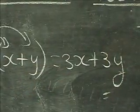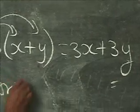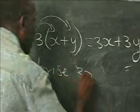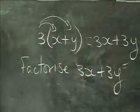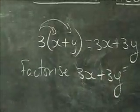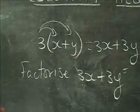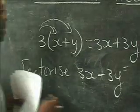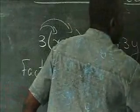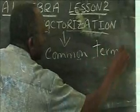But suppose you're told to factorize 3x plus 3y. The question is, what do you do? Factorize means you need to find some sort of factor — something that is common. So when we speak about factorization in this context, we are speaking about taking out common terms.